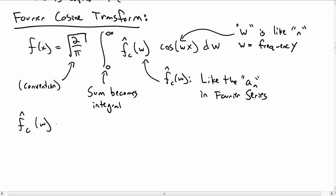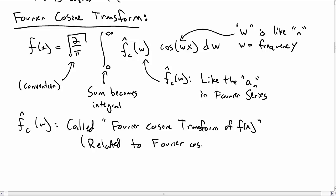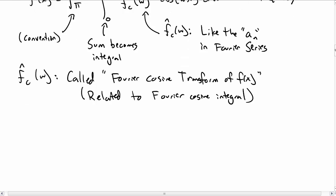In terms of notation, we call f̂_c(ω) the Fourier cosine transform. That's what we call it, that's what we mean by it. This is closely related to something called the Fourier integral, which doesn't have the square root of 2 over π factor, and we can pretty much use them essentially interchangeably.